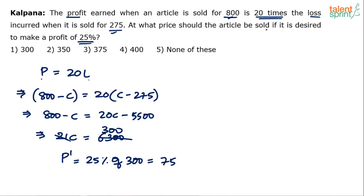What should be the selling price? Selling price is cost price plus profit. So 300 plus 75 equals 375. Option 3 has to be the answer.